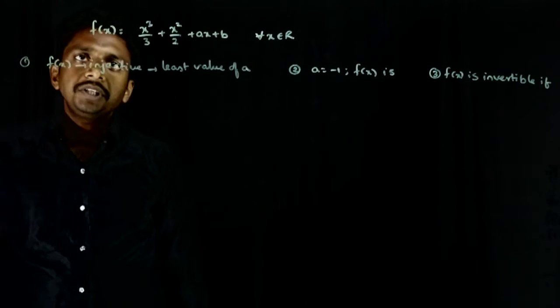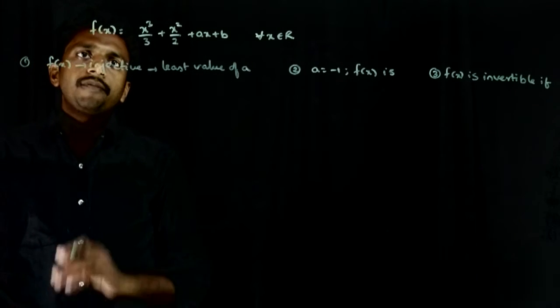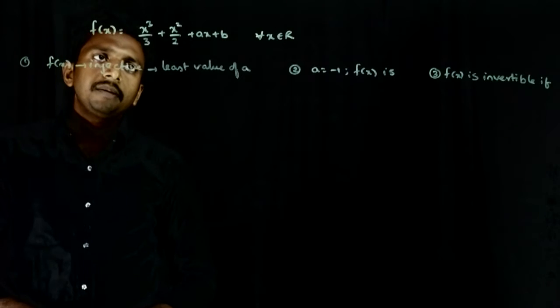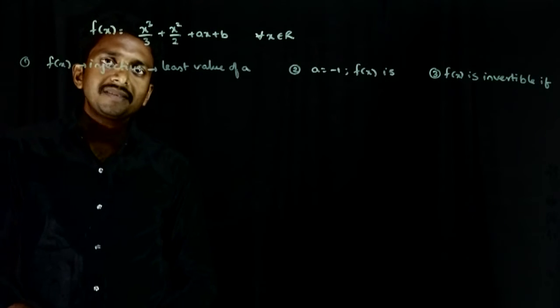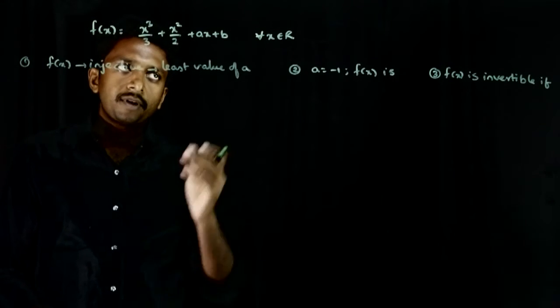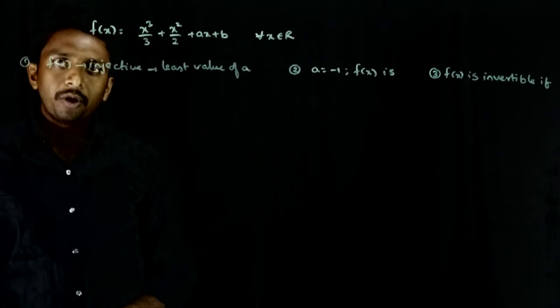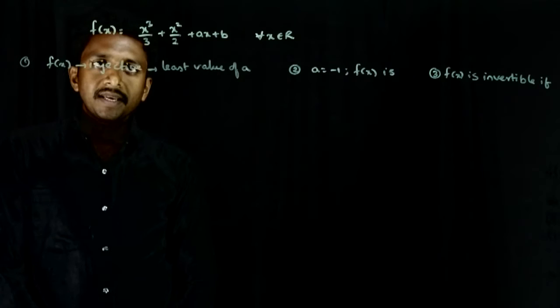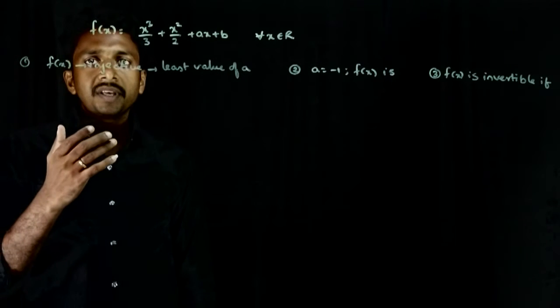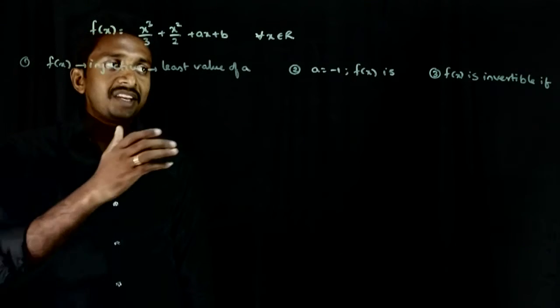So, welcome students. This question may be given to you. f of x is x cubed by 3 plus x squared by 2 plus ax plus b, for all x belongs to R. Basically, f of x is a cubic polynomial. The questions given are, this is a comprehension question with 3 questions.